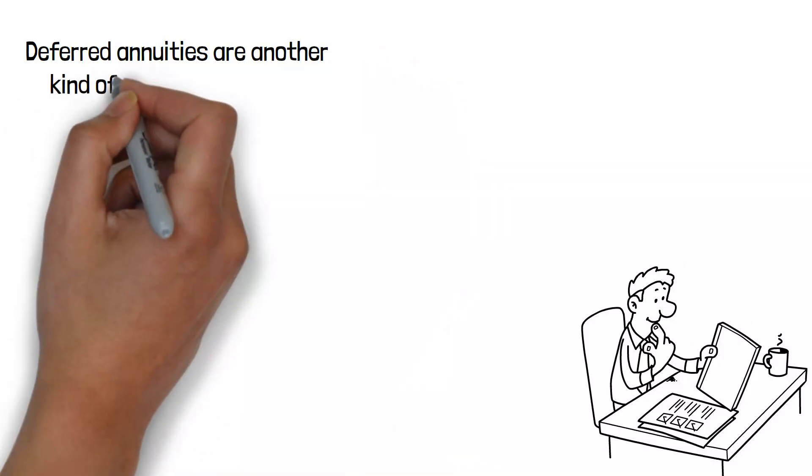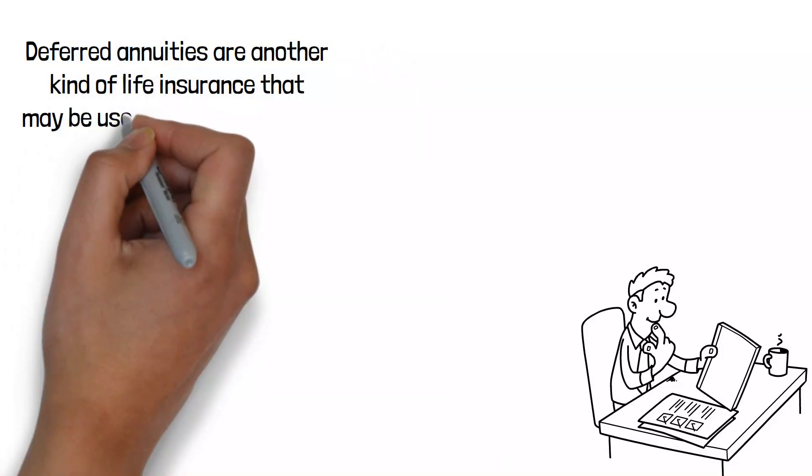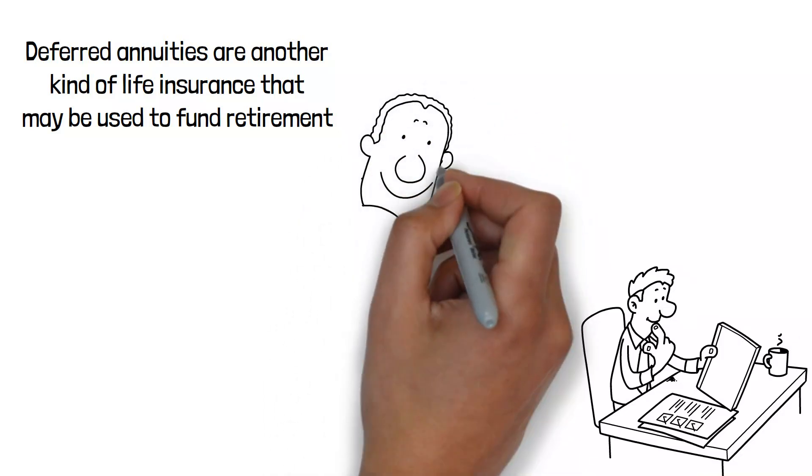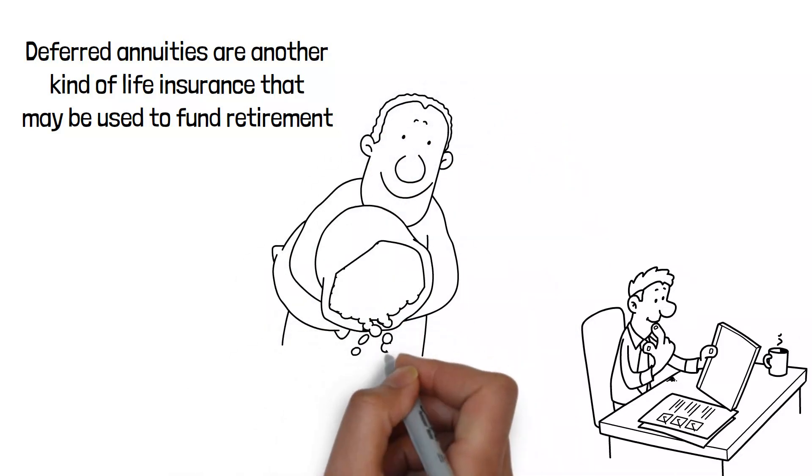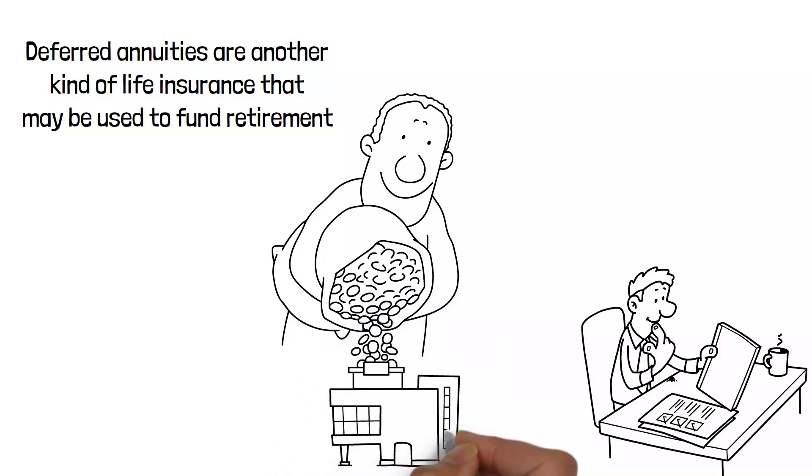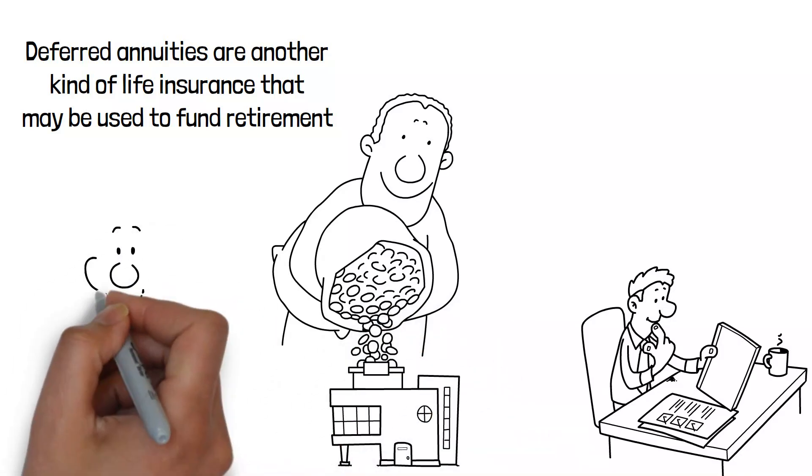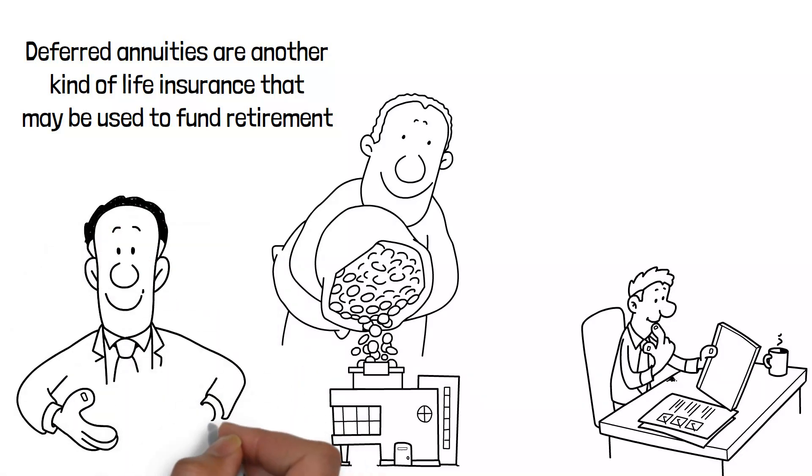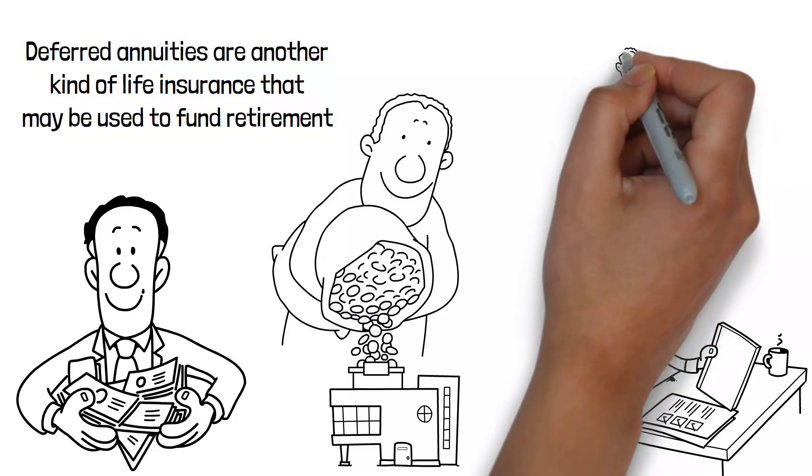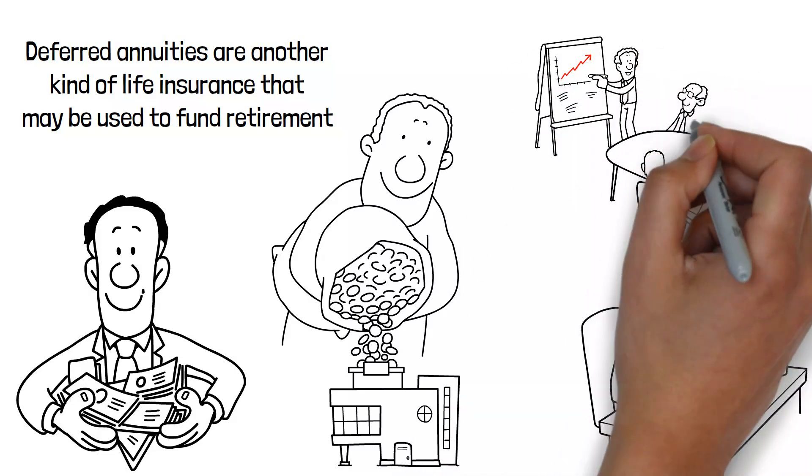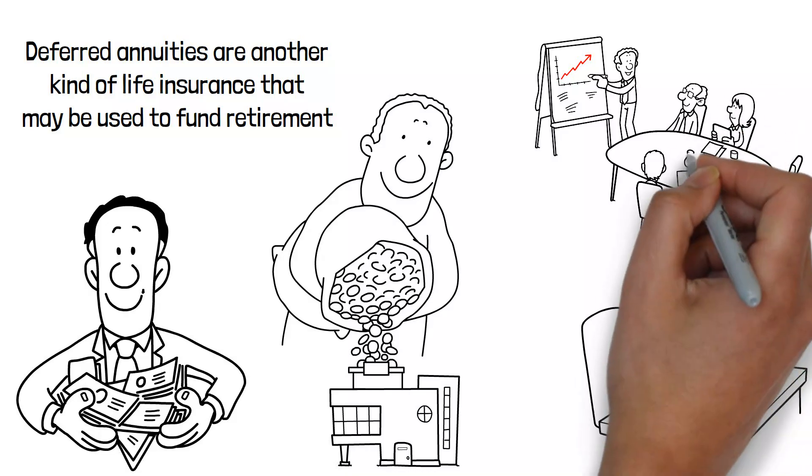Deferred annuities are another kind of life insurance that may be used to fund retirement. A delayed annuity enables you to invest a lump sum amount that grows tax-deferred until you begin receiving payments in retirement. A delayed annuity may be funded with life insurance to provide a guaranteed income stream for the rest of one's life.